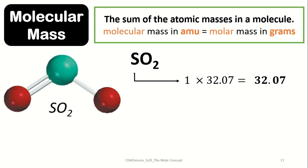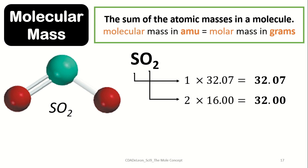Next, we have oxygen, which has two atoms. So we need to multiply those two atoms of oxygen by its atomic mass, which is 16, giving us 32. Then we just need to add all of the respective atomic masses: 32.07 plus 32 is equivalent to 64.07.